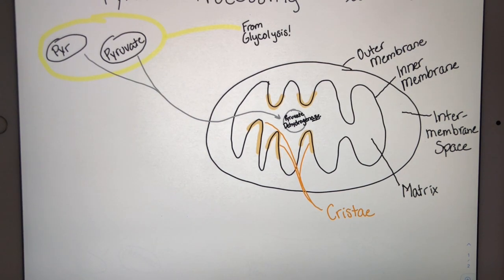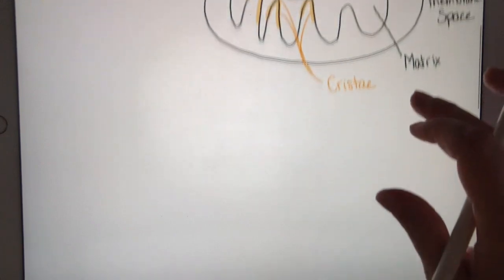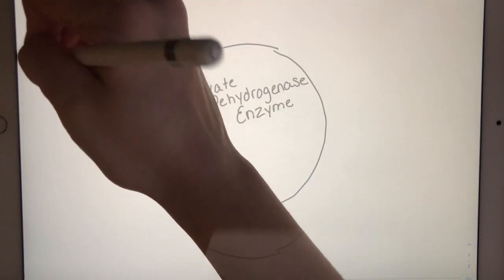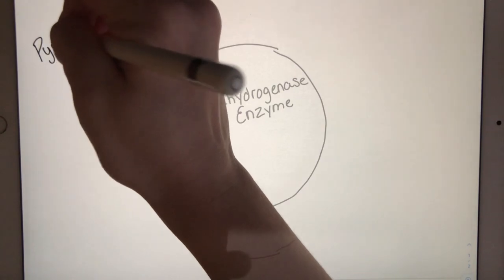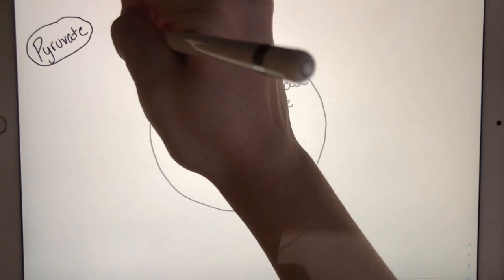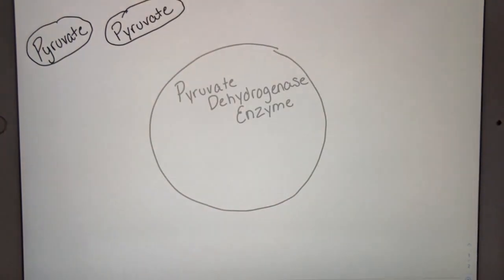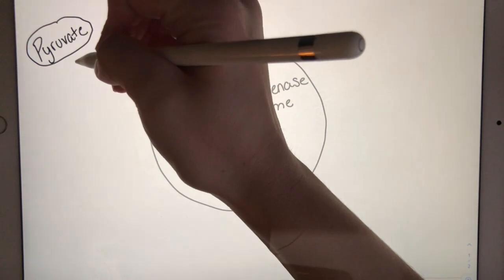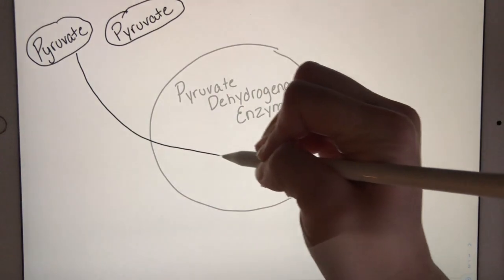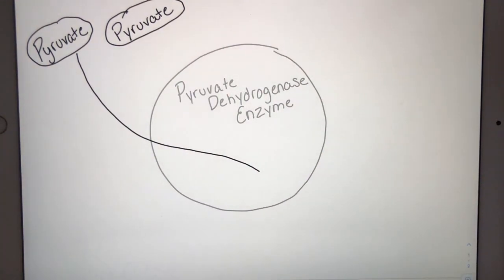So I'm going to redraw so we can make this enzyme larger. I'll keep the enzyme in gray. And if you remember, we have two molecules of pyruvate from glycolysis. And these have come into the mitochondria from the cytoplasm. So we have one of our pyruvates going into this pyruvate dehydrogenase enzyme.